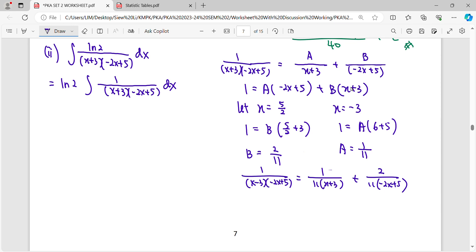Then only we put that to our integration. So 1/11 factorize out. So when you factorize out, inside here remaining 1/(x+3) and 2/(-2x+5).